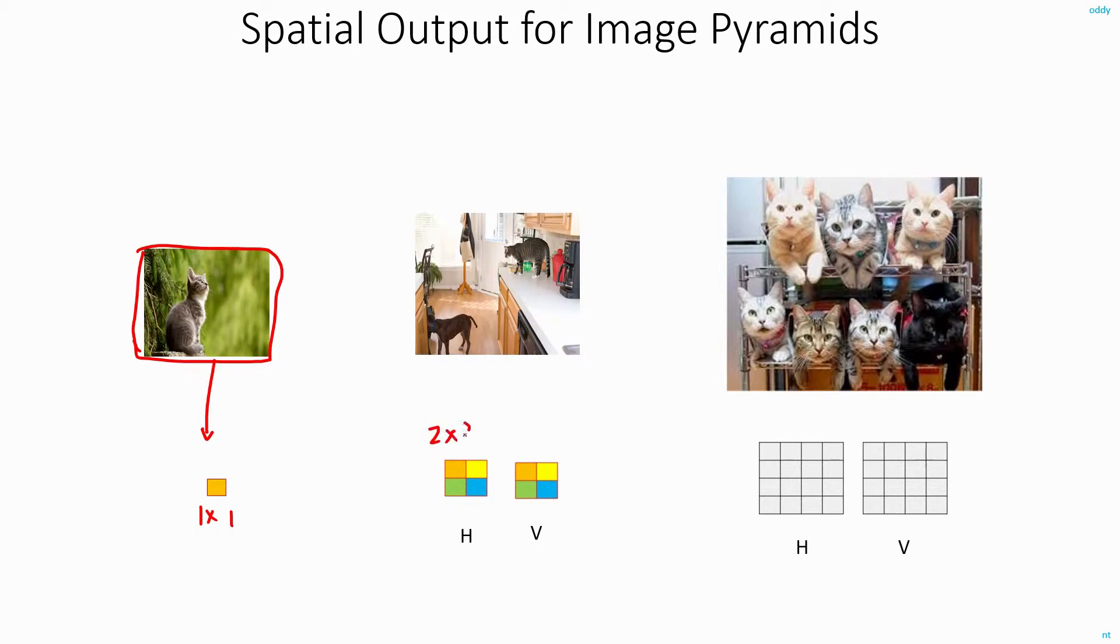And with this 2x2 output, you will be able to detect up to four objects in different locations. For example, this box may not be able to detect any object, the cat is only partially visible here, but this cat will get detected with the yellow box.